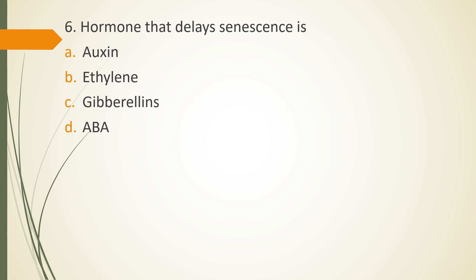Question 6. Hormone that delays senescence is. Option A. Auxin. Option B. Ethylene. Option C. Gibberellin. Option D. ABA. The correct answer is option C. That is Gibberellins delay the senescence.